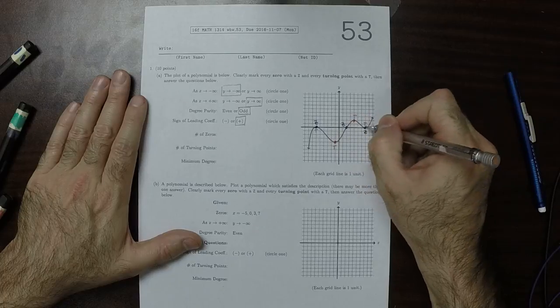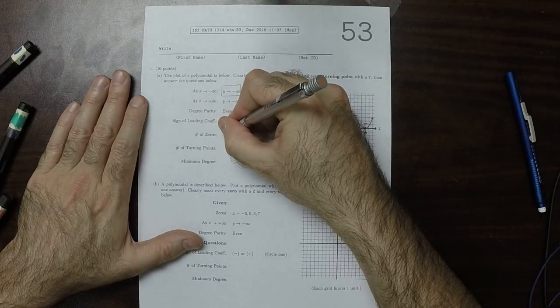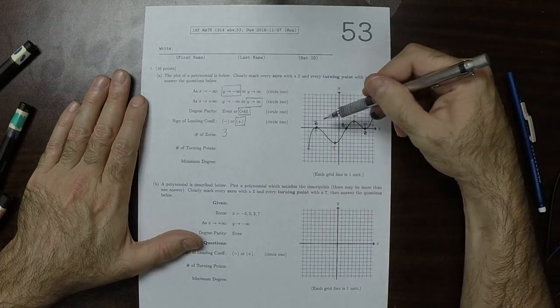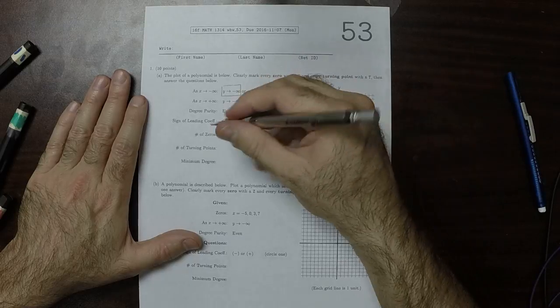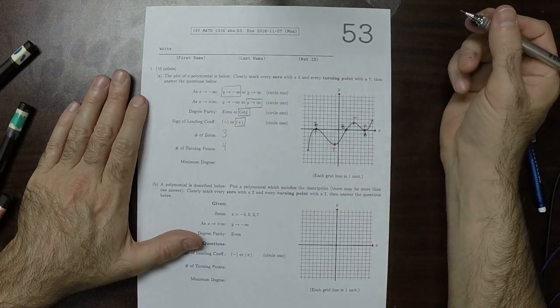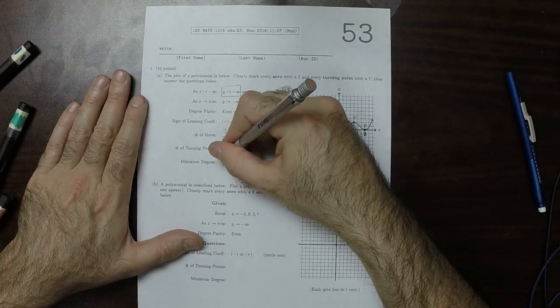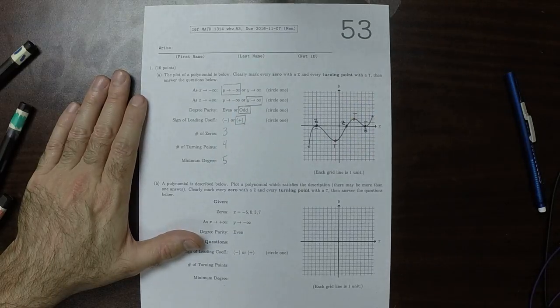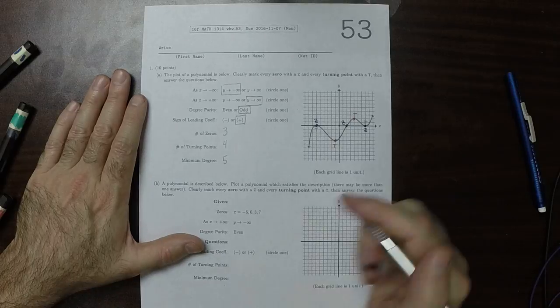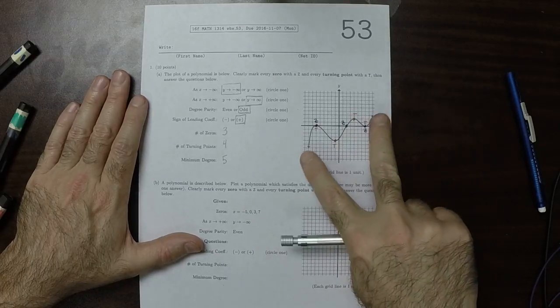The number of zeros is one, two, three. The number of turning points is one, two, three, four. And therefore the minimum degree is five because the minimum degree is always one more than the number of turning points. And it could be five because this is odd.